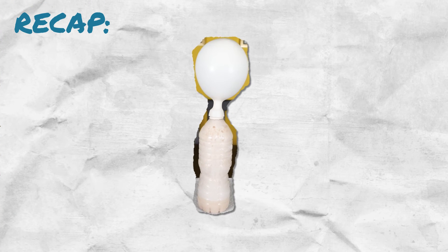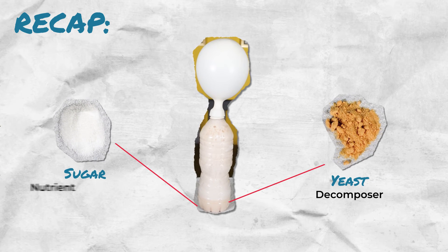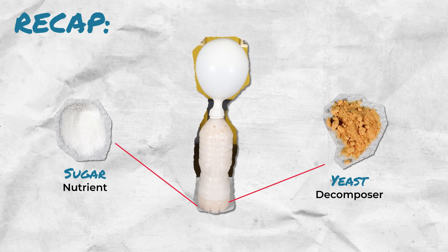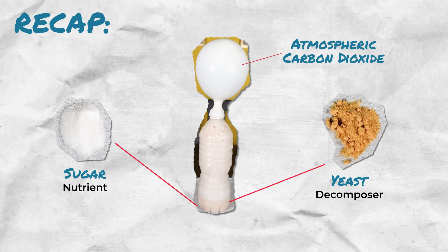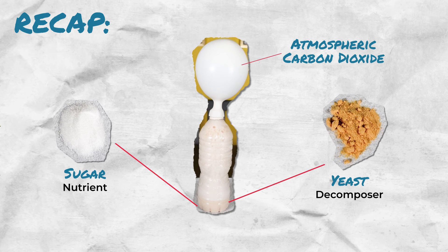Before I clean up, let me recap the lab that we did. We used yeast, which is a decomposer, to break down sugar, which is an important nutrient. When yeast breaks down sugar, it recycles carbon dioxide into the atmosphere. Therefore, we visualized the decomposition of sugar by yeast to recycle and reuse carbon dioxide. Thanks for watching, and make sure you tune in to the next video.